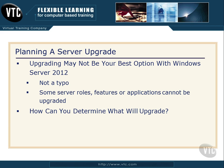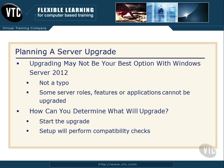So how do you go about determining what will upgrade? Very simple — just start the upgrade process. Setup is going to automatically perform some compatibility checks. A compatibility report will be generated, and then you'll know whether or not the services, the roles, and the features that you need can be upgraded on this machine. Before you even start this process, make sure you get a backup of that machine and its data just in case.